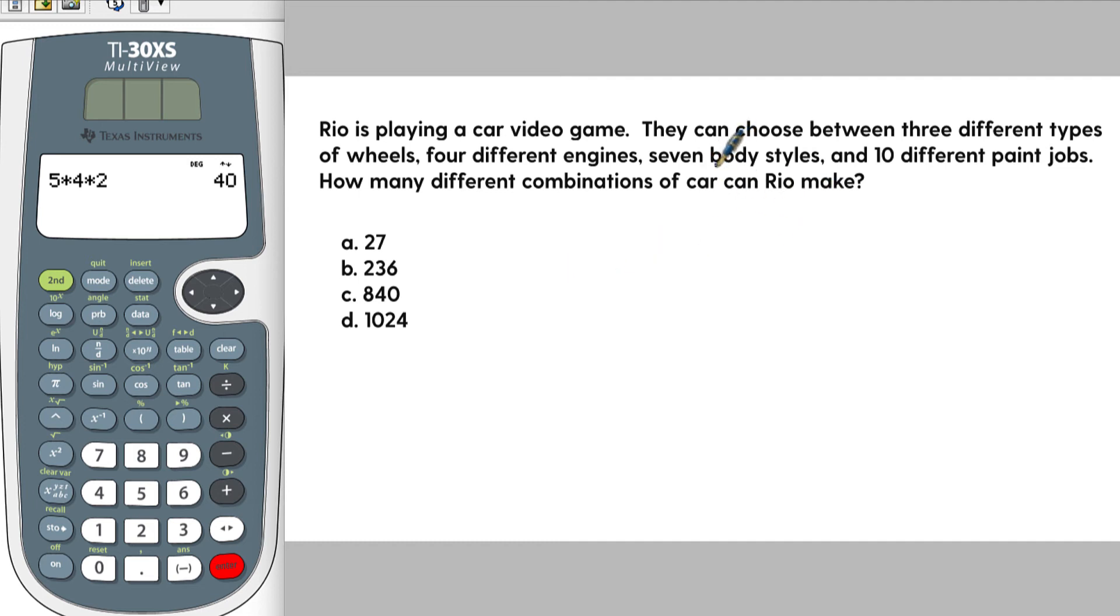So this is a very similar question. We've got three different types of wheels, so let's put that first. And then four different types of engines, and then seven different types of body styles, and then ten different types of paint jobs. And we're just going to multiply them all together.